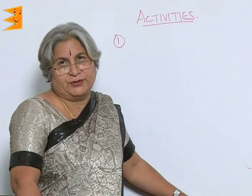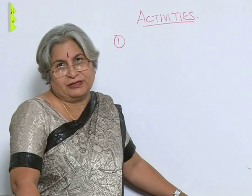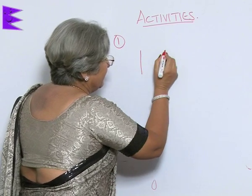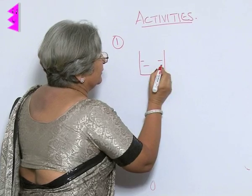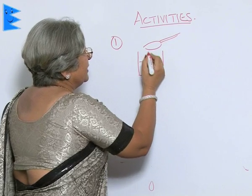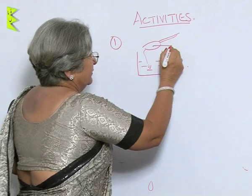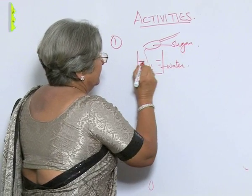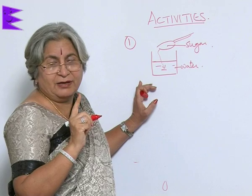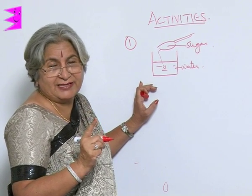Science is about doing and observing — you want to do everything, see yourself, and then reach a conclusion. Take a beaker, fill it with water, then add a spoon of sugar, stir it, and see if the level has increased. To be more sure, mark the level before adding sugar. If the level has still not increased, that is your first observation.